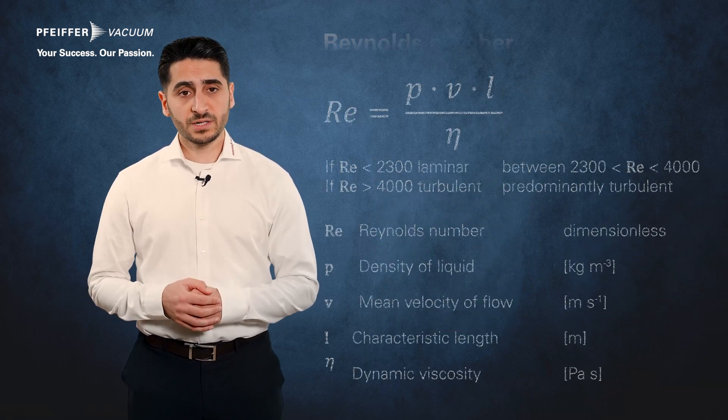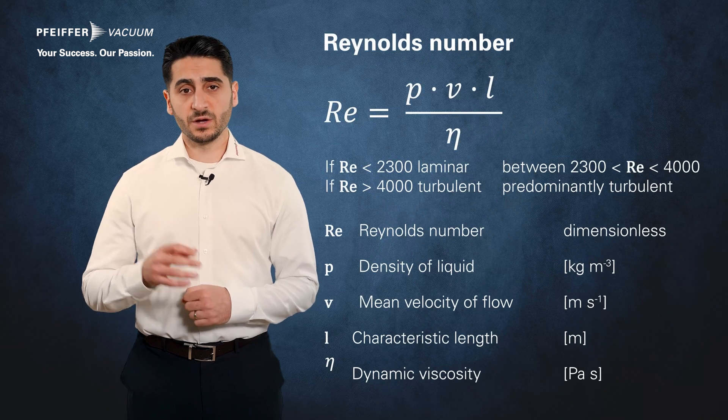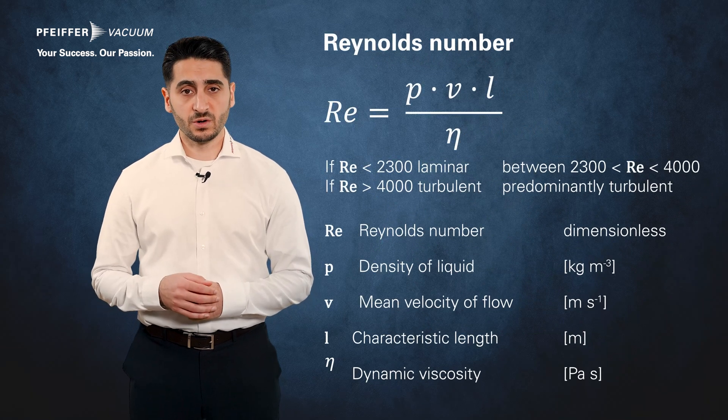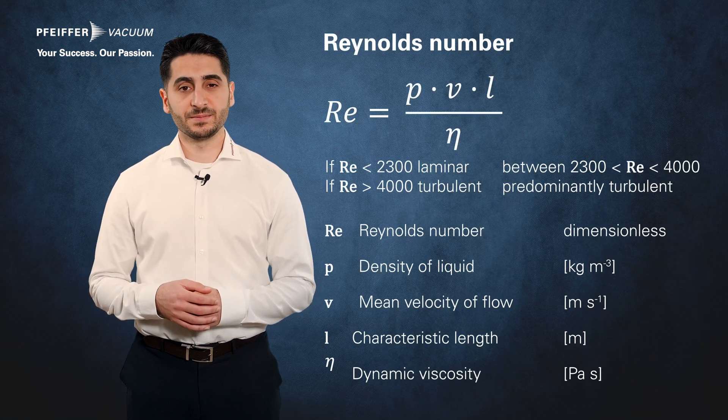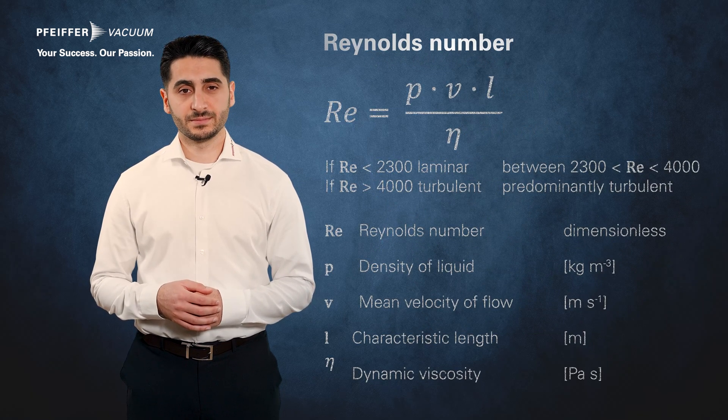The boundary between these two areas of viscous flow can be expressed by the Reynolds number. It is important to mention that turbulent flow in a vacuum only occurs during pump-down operations from atmospheric pressure or when rapid venting is carried out.